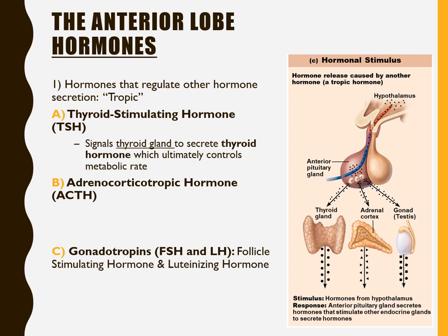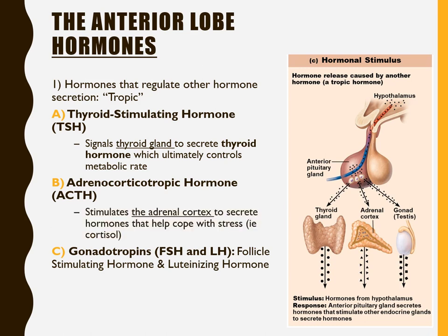Starting with the tropic hormones: TSH, or thyroid stimulating hormone, stimulates the thyroid gland to secrete thyroid hormone, which controls our metabolic rate. ACTH, adrenocorticotropic hormone, stimulates the adrenal cortex to secrete stress hormones such as cortisol. The name breaks down as adrenal-corticotropic, pointing to its target.